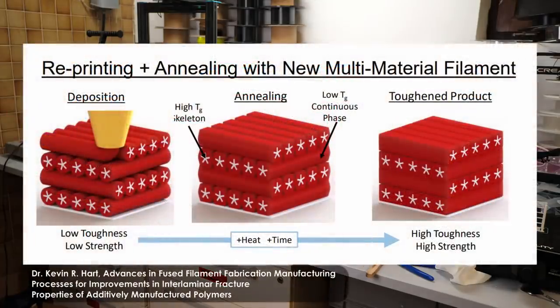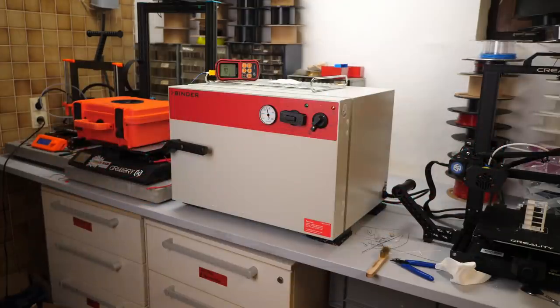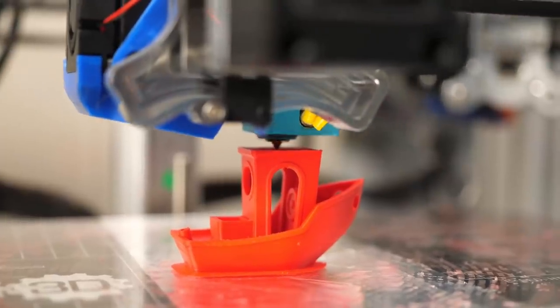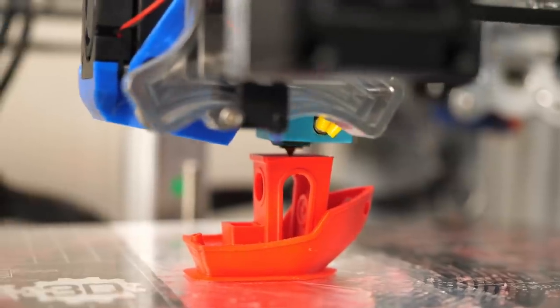The long exposure to heat, in the paper they treated parts for 3-7 days, supposedly fuses the ABS layers, giving it superior strength, especially in between the layers. Sounds like a plausible idea to me and worth trying out.